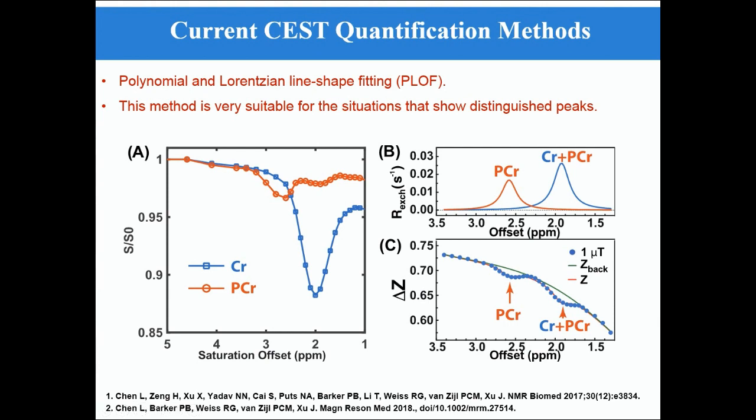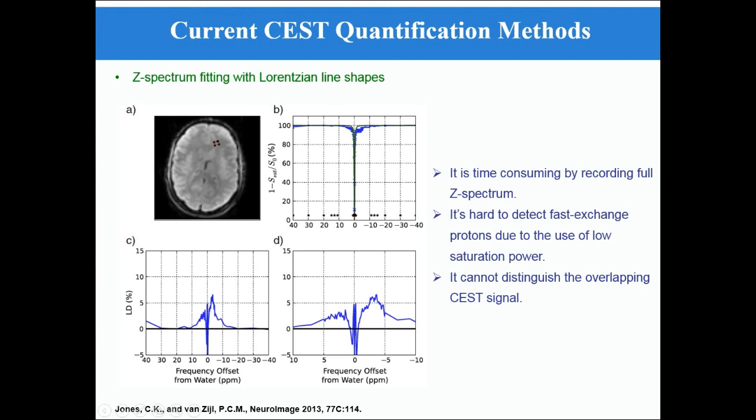The quantification of CEST signal has always been a hot and challenging topic. For some special CEST agents that show distinguished peaks such as creatine and phosphocreatine at high field, the CEST signal can be extracted and quantified using PROF, which is short for polynomial and Lorentzian line-shape fitting. Another popular strategy is to acquire the full Z-spectrum with low saturation power and fit it by assuming Lorentzian line-shapes for water and the magnetization transfer pools. However, this method is time-consuming and hard to detect faster exchange protons due to the use of low saturation power. Furthermore, this method cannot distinguish the overlapping CEST signal.